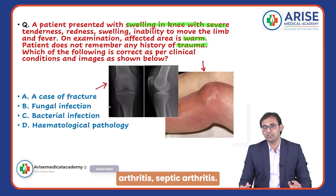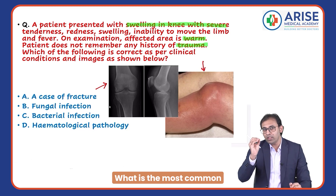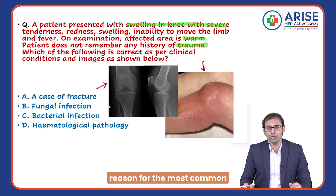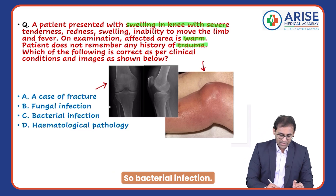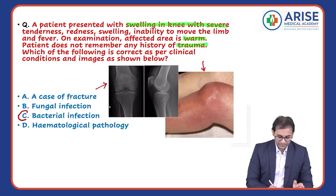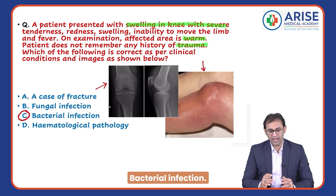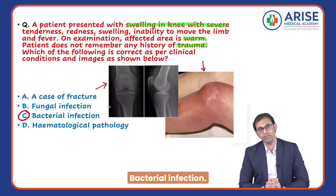In septic arthritis, what is the most common causative agent? Obviously Staph — it is a bacterial infection.